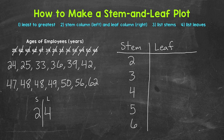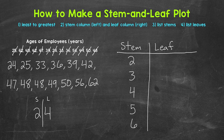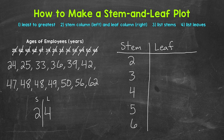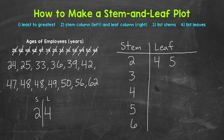So the stems represent the tens digits. We went from the lowest tens digit of two all the way to the highest tens digit of six and included everything in between. Now we need to list our leaves, starting with 24. For 24, we have a stem of two and a leaf of four. Next, 25: a stem of two and a leaf of five.